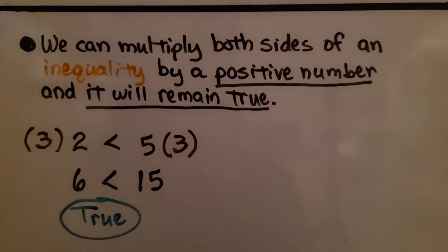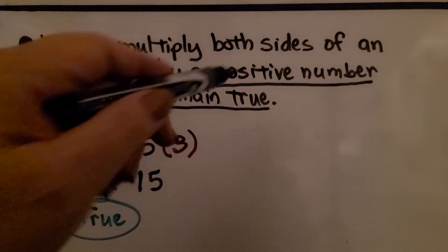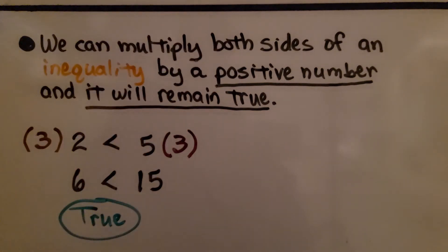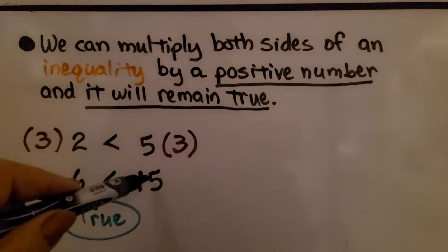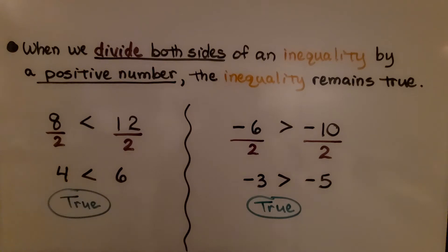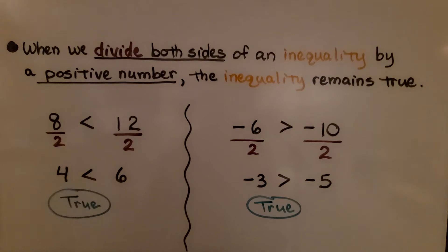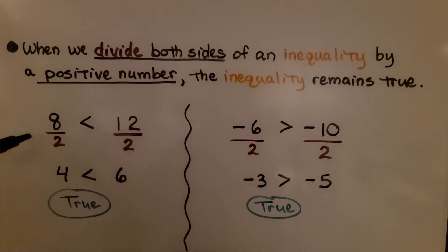We can multiply both sides of an inequality by a positive number and it will remain true — pay attention that I said positive number. We have 2 is less than 5. If we multiply both sides by positive 3, we get 6 is less than 15 — that's true. When we divide both sides of an inequality by a positive number, the inequality also remains true. If we have positive 8 less than positive 12 and divide by positive 2 on each side, we get 4 is less than 6 — that's true.